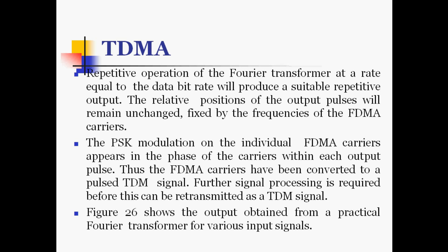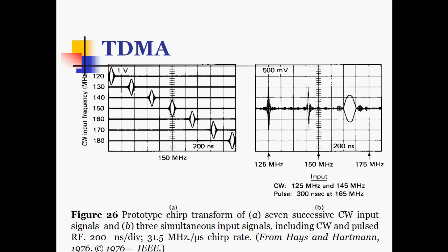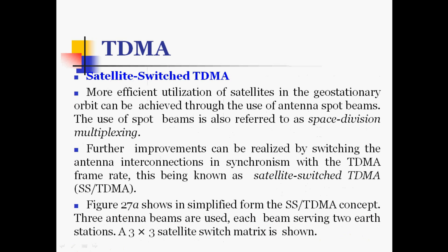The output from a practical Fourier transformer is shown for various input signals. A prototype chip transformation of 7 successive CW continuous wave input signals and 3 simultaneous input signals — including CW and pulsed RF at 200 ns per division — is demonstrated. The CW input frequency shown is at 150 MHz. In section B, 3 simultaneous input signals are given at 125 MHz, 150 MHz, and 175 MHz, with continuous signals at 120, 130, and 150 MHz also transformed.